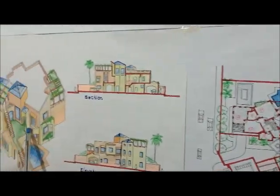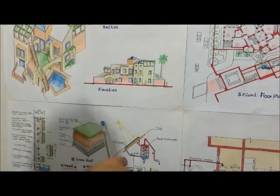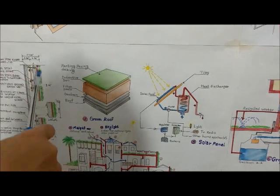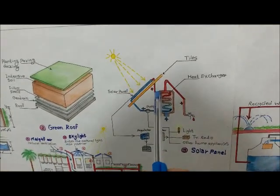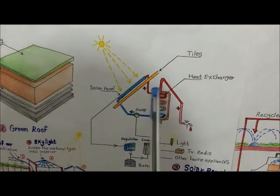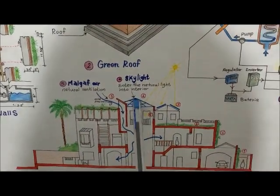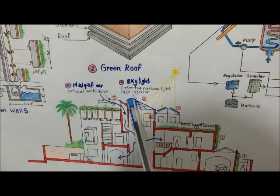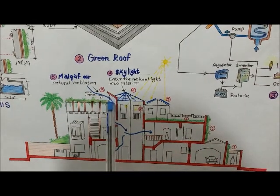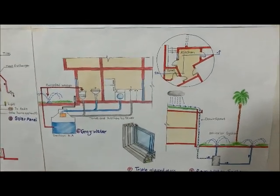This is the isometric view for the villa, and the section. This is the elevation. And these are the sustainable details in my project: green walls, green roofs, and solar panels to provide hot water and electricity. I use the inner courtyard for skylight to bring natural light into the interior. I use Mashrabiya for natural ventilation. I also use grey water recycling, double-glazed glass, and a rainwater collection system.